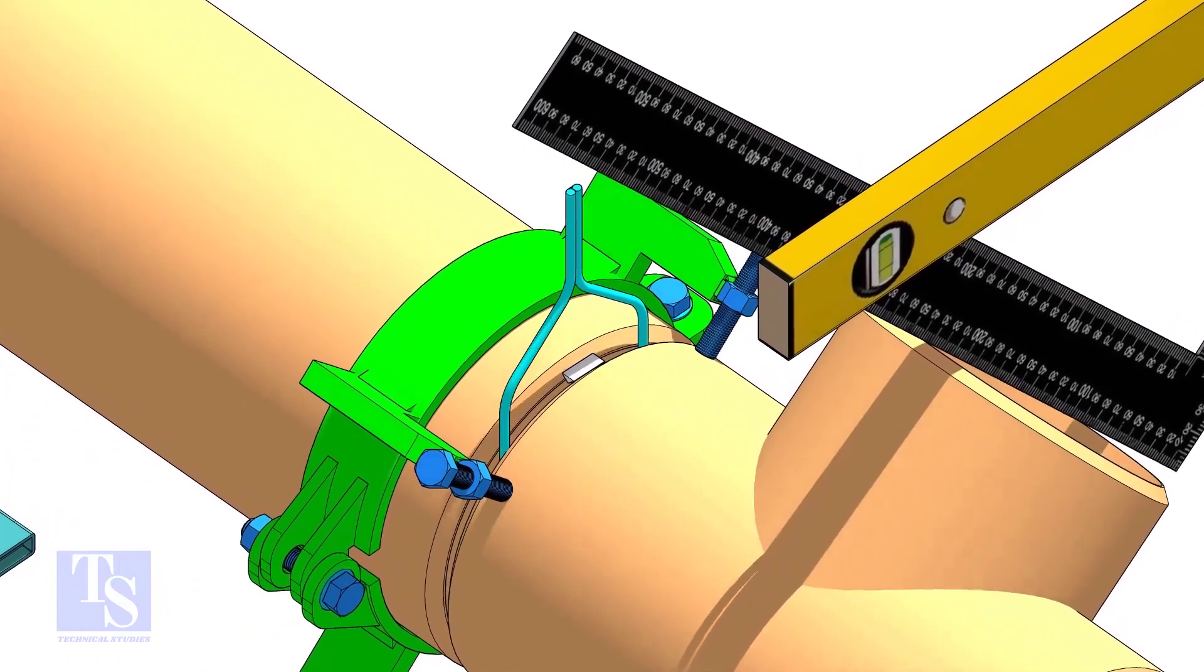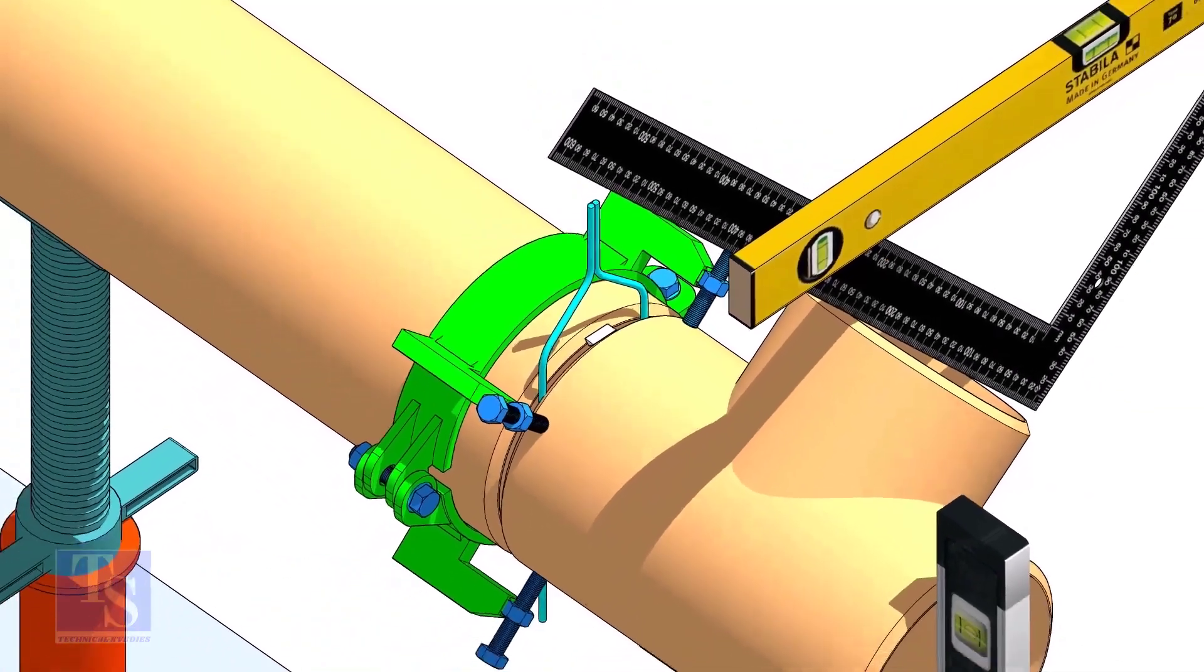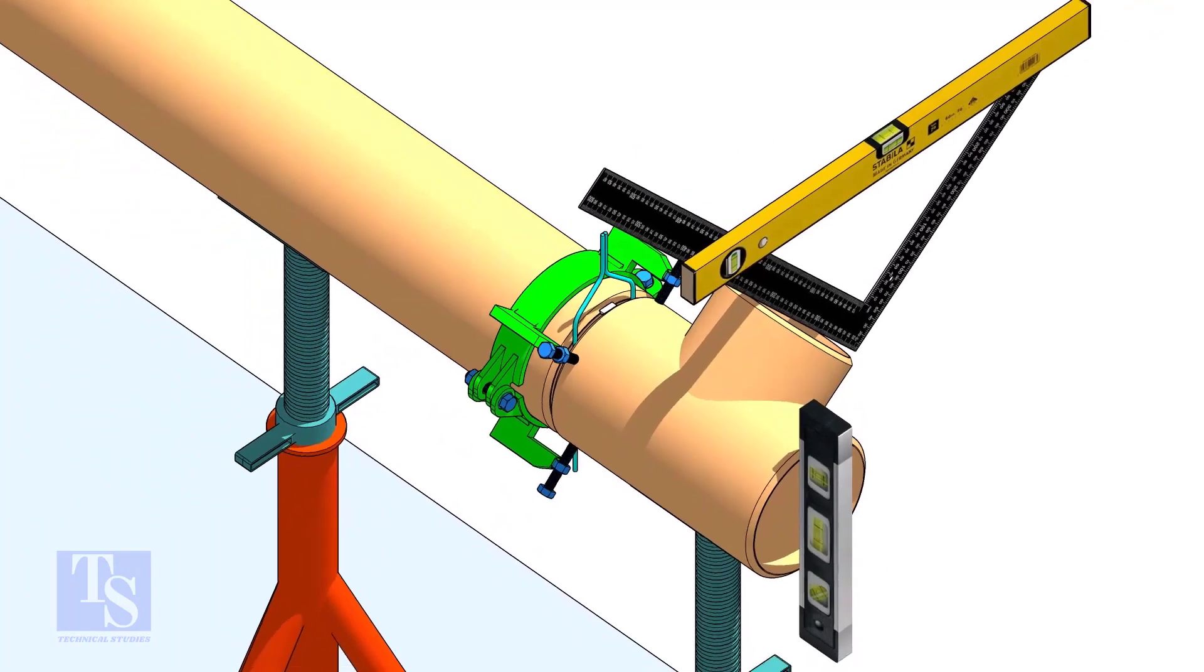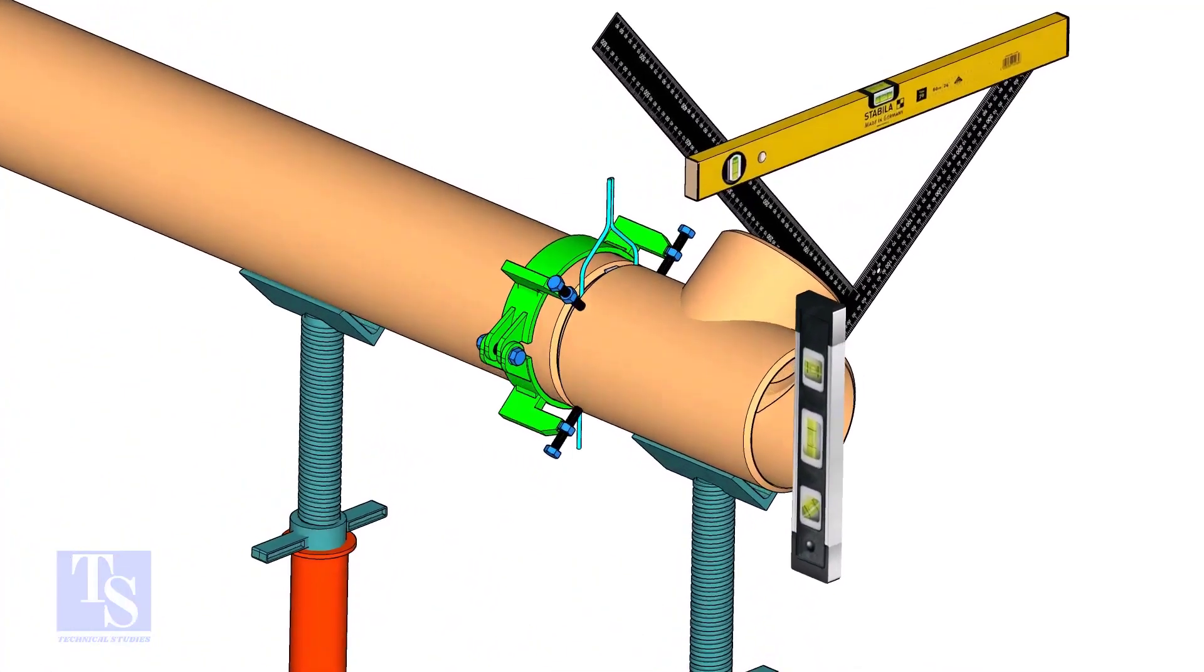Tack weld on the top side of the joint. Check the end level of the T. Tack weld at the bottom side.